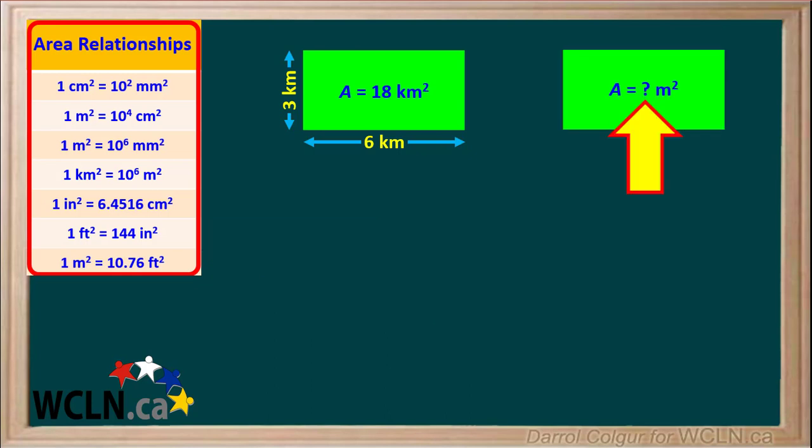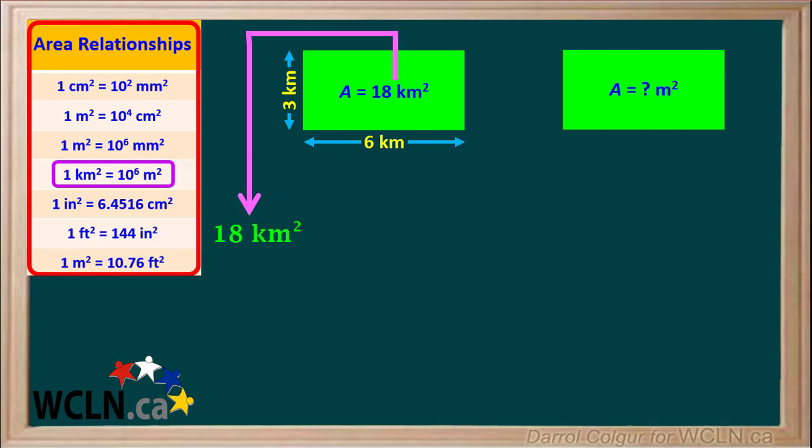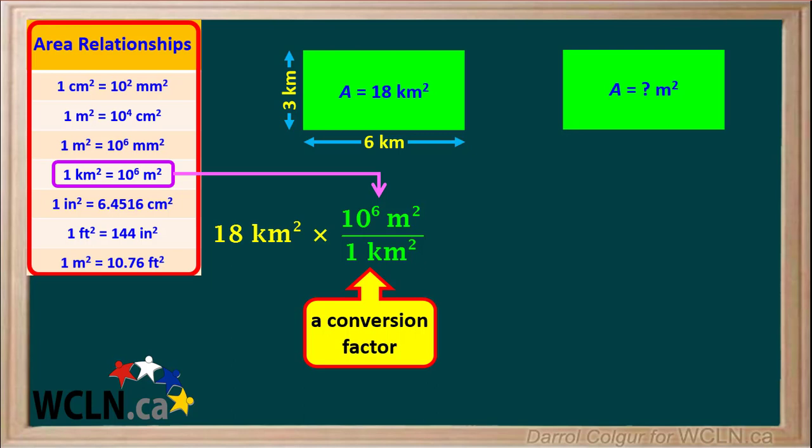Let's say we want to convert our area in square kilometers to an area in square meters. We can use the relationship which states that 1 kilometer squared is equal to 10 to the 6th meters squared. We'll take our 18 kilometers squared and multiply it by a conversion factor based on the relationship between kilometers squared